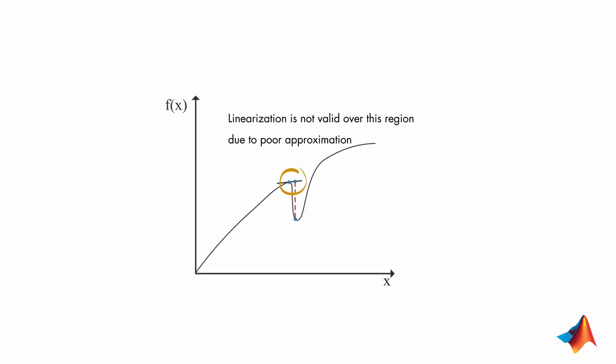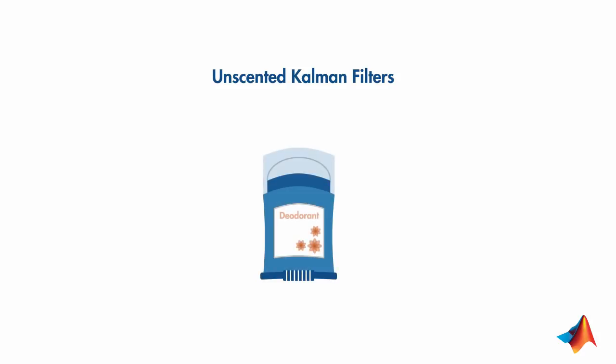To address the issues with extended Kalman filters, you can instead use another estimation technique called the unscented Kalman filter. Did you know that the creator of the filter came up with this name after noticing a deodorant on his coworker's desk? Now back to the filter. Instead of approximating a nonlinear function as an extended Kalman filter does, unscented Kalman filters approximate the probability distribution.